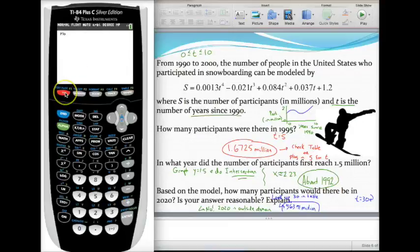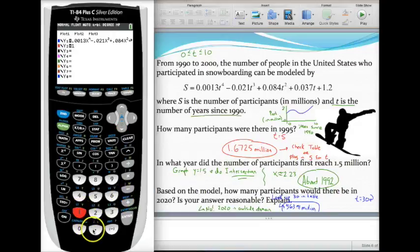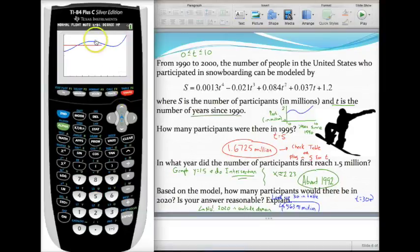I can't be any more accurate than that with my table. So what I like to do is this trick: go back to y equals and anytime they ask you for a y value, type that in as a second equation. Type in 1.5. Now the line y equals 1.5 is going to be a flat horizontal line and we can see that there are three times in this decade where there are 1.5 million participants. I want to find this first intersection point.